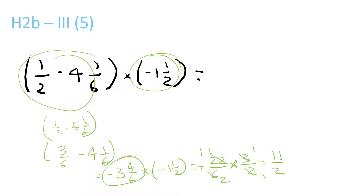You can also change this into a mixed number: equals 5 and 1/2, because 2 goes into 11 five times with remainder 1, and then the 2.